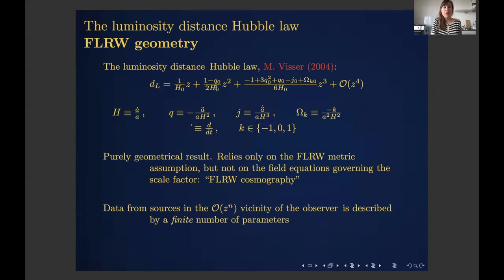At higher order we have the deceleration parameter entering, which is the second time derivative of the scale factor with a minus sign by convention. At yet higher order we have curvature entering through the FLRW curvature parameter, and the jerk parameter, which is the third time derivative of the scale factor. These are purely geometrical results relying only on the FLRW metric, and this is sometimes referred to as FLRW cosmography.